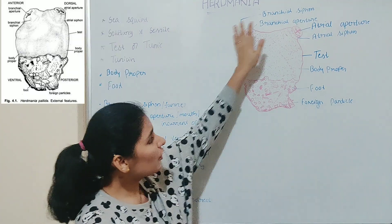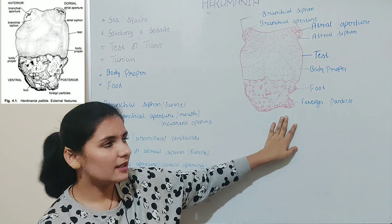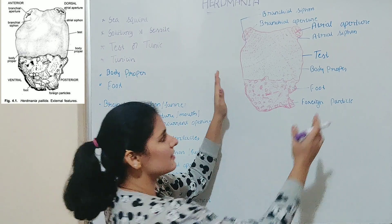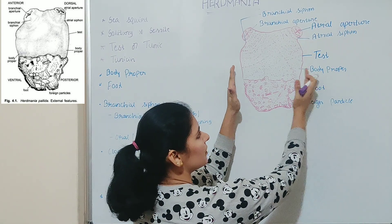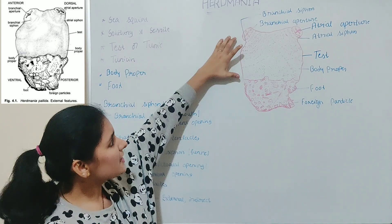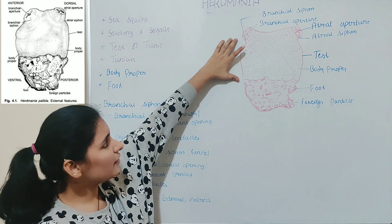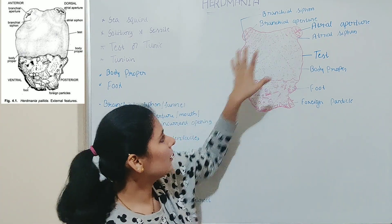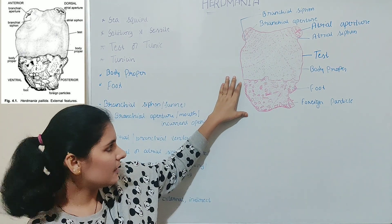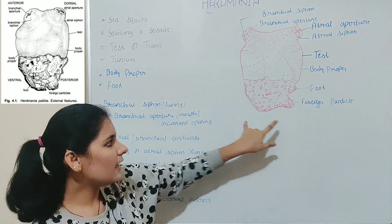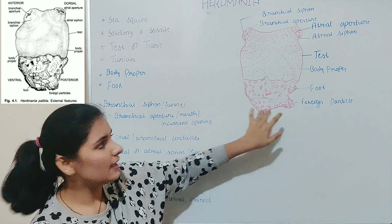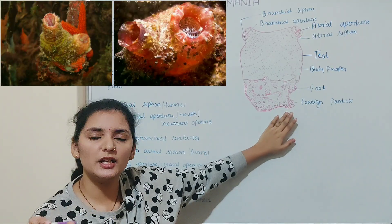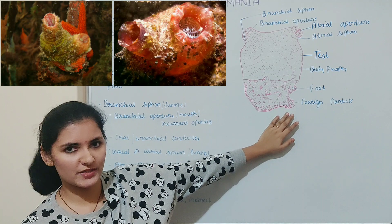If you observe the body of the organism, Herdmania is roughly rectangular in shape and it is somewhat laterally compressed. The free surface is slightly longer and broader when compared to the base. The base is smaller and narrower in size. The size of Herdmania varies from a few millimeters to a few centimeters.